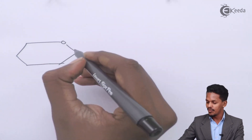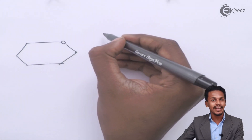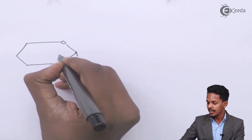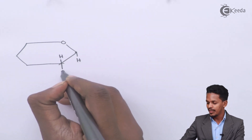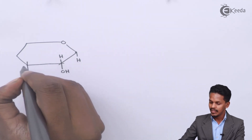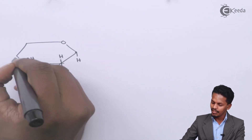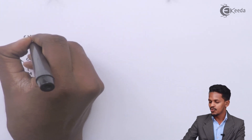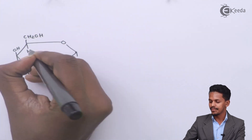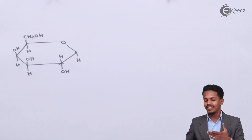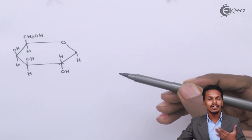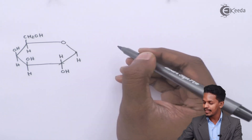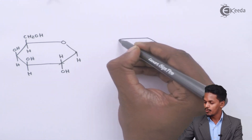At the first carbon atom, because of the beta glycosidic linkage, there will be H. The second carbon atom will consist of H on one side and OH on the downward side. The third carbon has OH, then H, then H, then OH. Carbon six has CH2OH and H. Just as we flipped the structure of beta-D-glucopyranose previously, here also we flip the structure to obtain it.